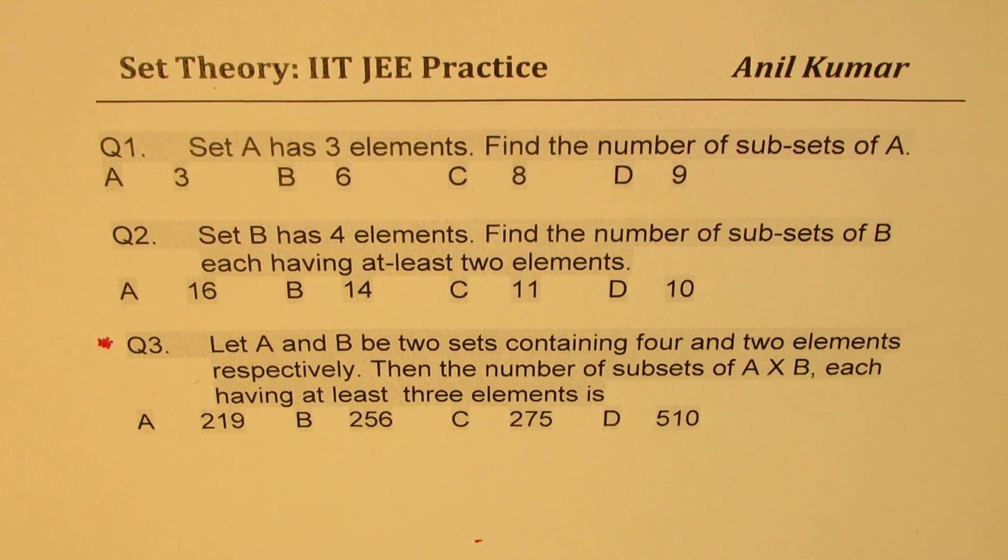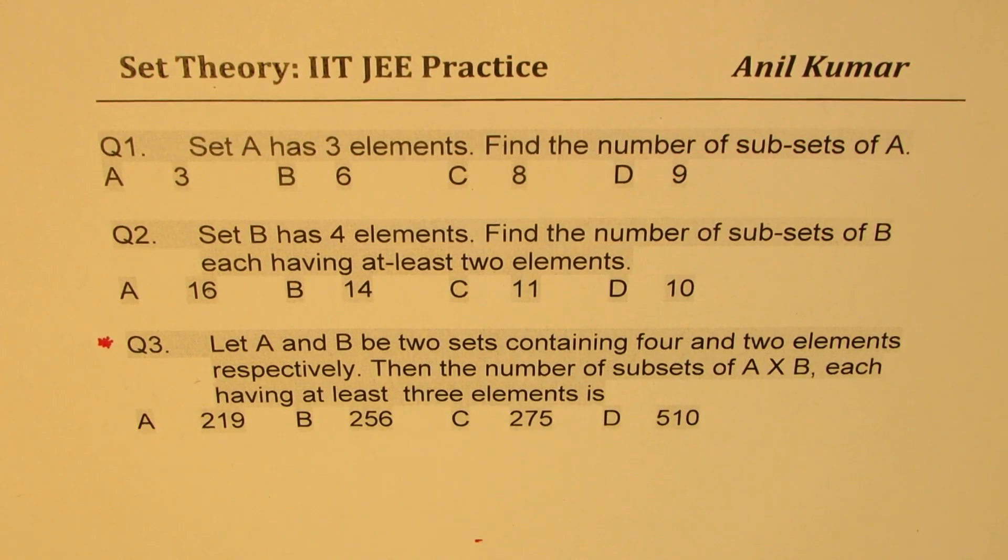We'll try to figure out how many subsets can we make from a given set. Question number one: Set A has three elements. Find the number of subsets of A. Choices are 3, 6, 8, and 9.